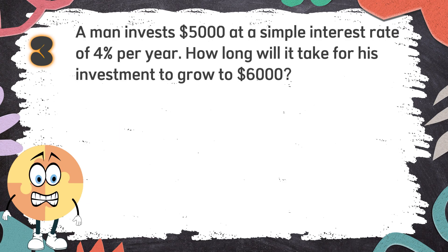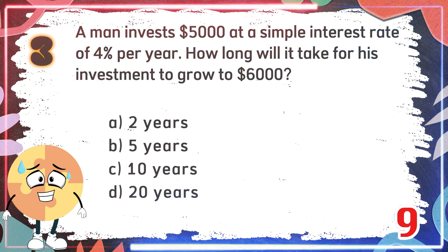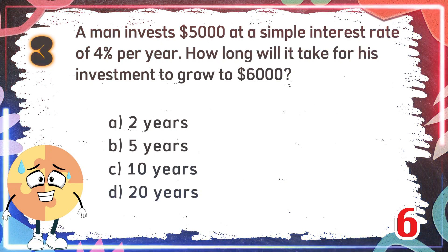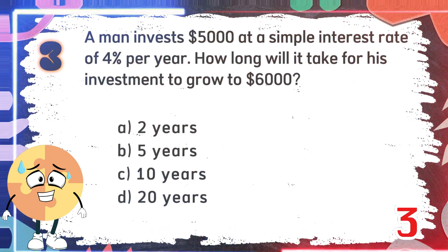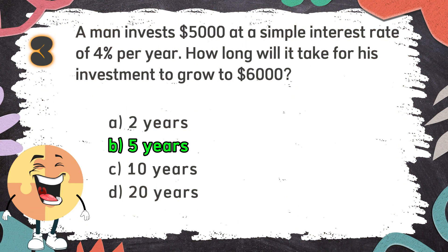Number 3. A man invests $5,000 at a simple interest rate of 4% per year. How long will it take for his investment to grow to $6,000? The choices are: A. 2 years, B. 5 years, C. 10 years, D. 20 years. The correct answer is B. 5 years.